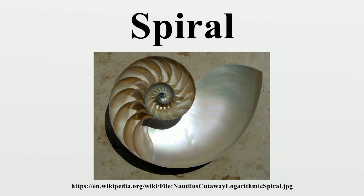Three-dimensional spirals. For simple 3D spirals, a third variable H is also a continuous, monotonic function of theta. For example, a conic helix may be defined as a spiral on a conic surface, with the distance to the apex an exponential function of theta. The helix and vortex can be viewed as a kind of three-dimensional spiral.